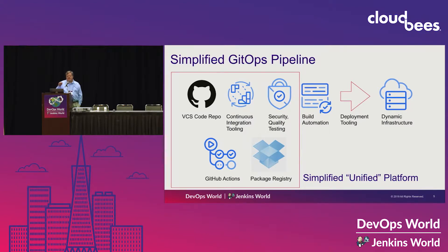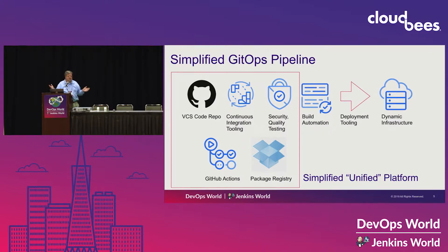This is a simplified pipeline. I've got a square around the part that GitHub is able to do for you now, and we've added GitHub Actions there and the package registry. Your build automation would still be run from the workflow — it will spin up instances, launch Maven, launch various compiles, whatever type of build automation you have. It still integrates with Jenkins very seamlessly and nicely. None of that changes unless you want to change it.